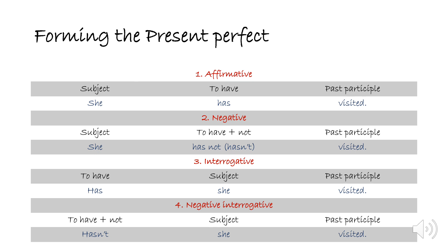In the negative, we use the subject followed by 'to have' plus 'not' followed by the past participle. In the interrogative, we use 'to have' followed by the subject and past participle. In the negative interrogative, we use 'to have' plus 'not' followed by the subject and the past participle.